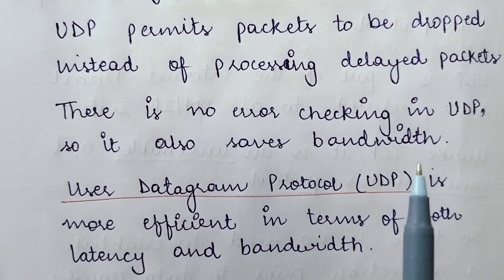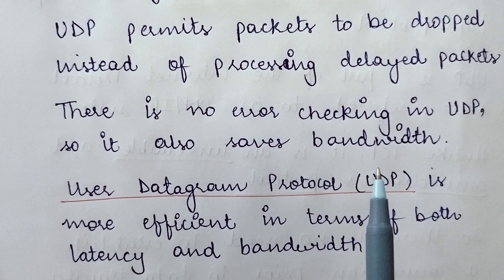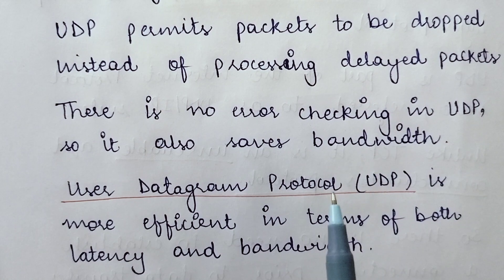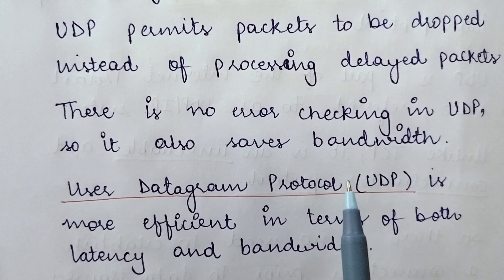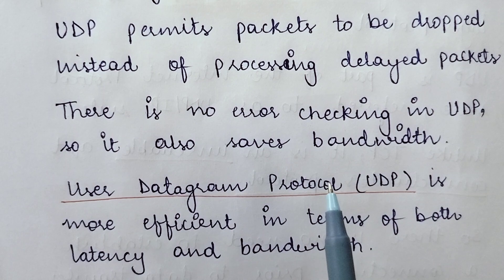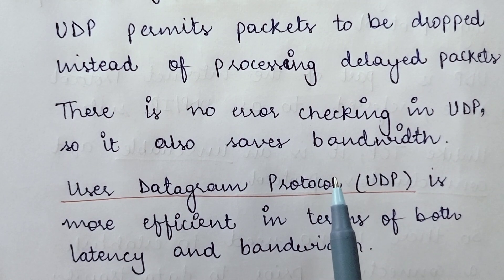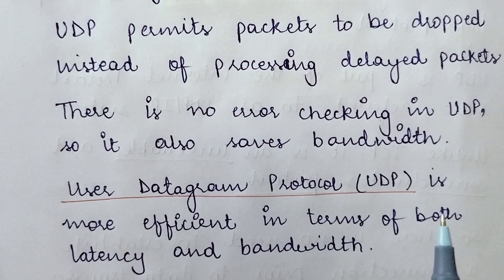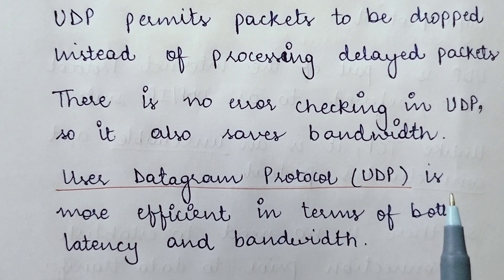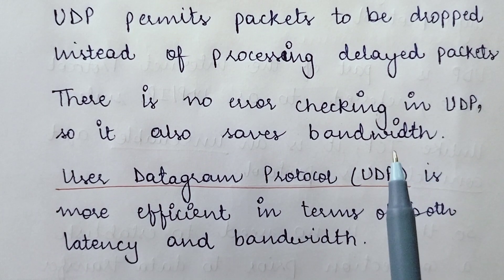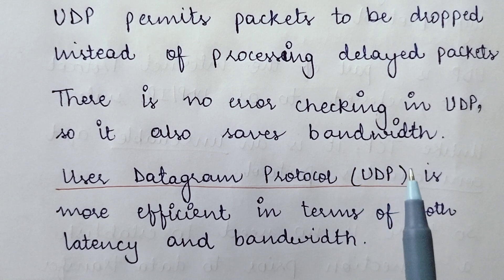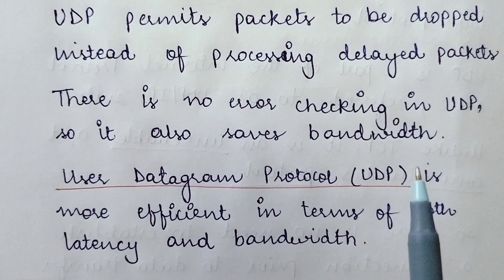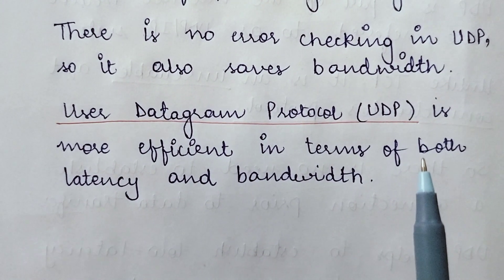This very feature of UDP saves bandwidth, because a lot of time is saved by not checking errors. A lot of time gets consumed when you do error checking and send acknowledgements. All that time is saved in the case of UDP because it does not bother to do these things. Hence, for this very reason it is called unreliable, but at the same time, since it skips all these procedures, it saves time and bandwidth, making it more suitable for real-time services.